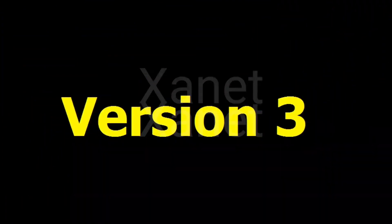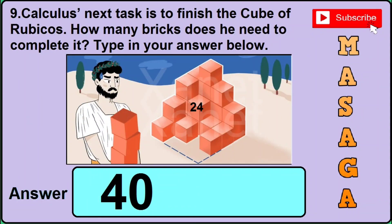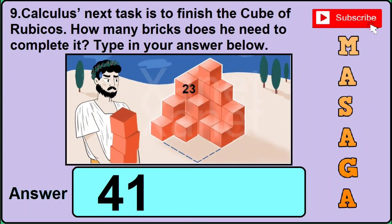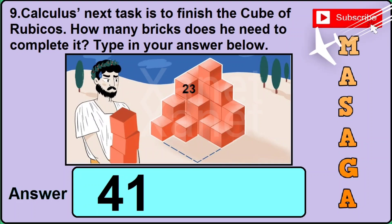Now in version 3, you will find this sort of image and if you find it then the correct answer would be 40. After each version, one more cube of blocks is added. Now in version 4, you will find this sort of image and if you find it then the correct answer would be 41, so you need to type 41 if you find this image in question number 9.